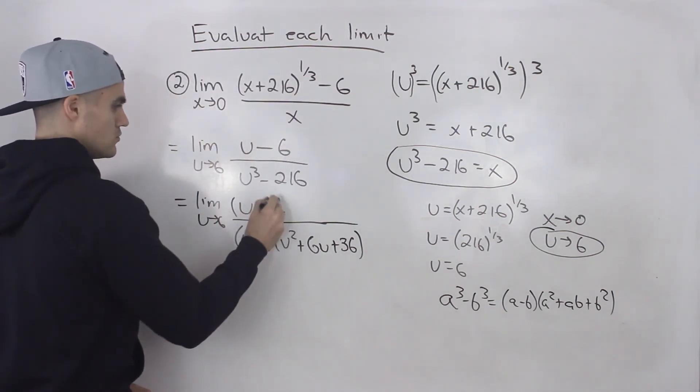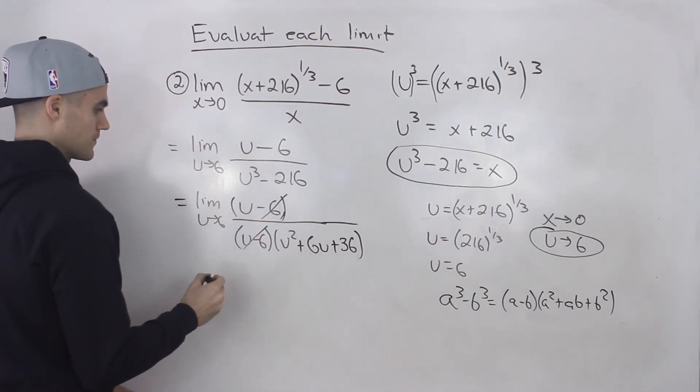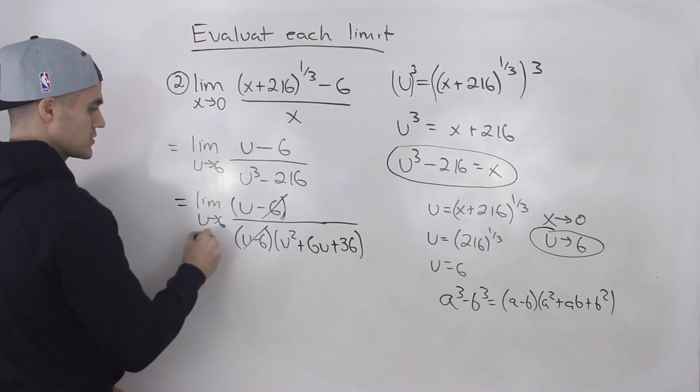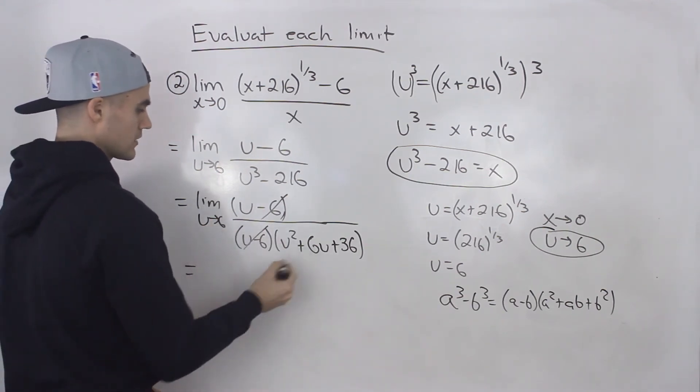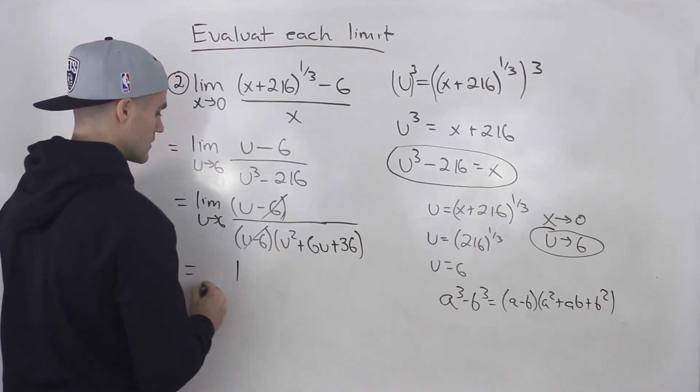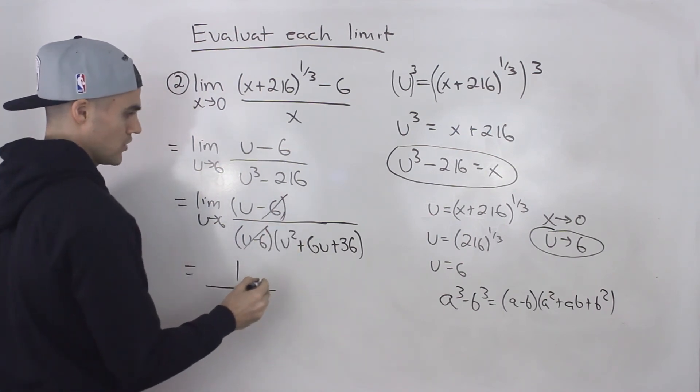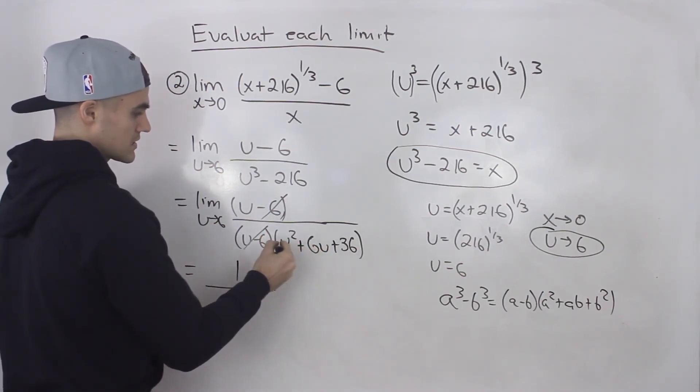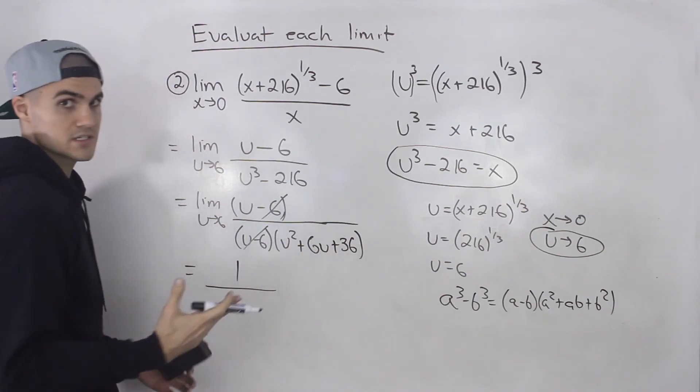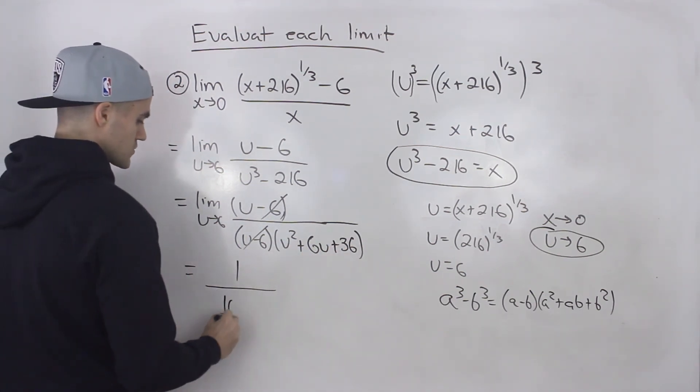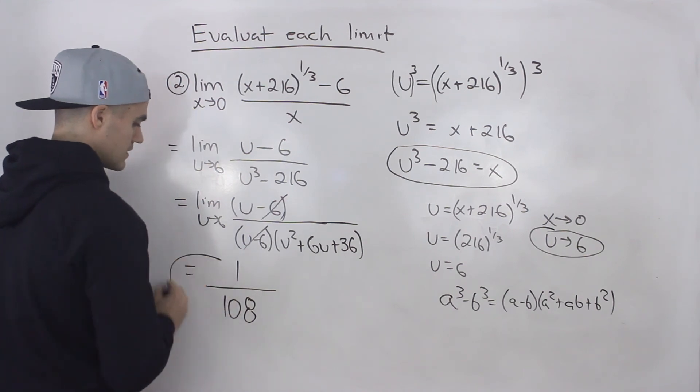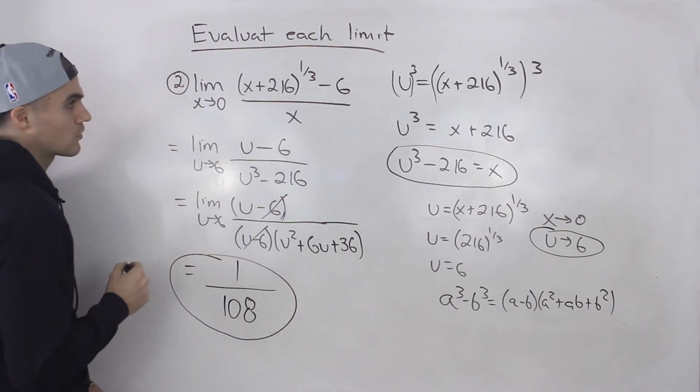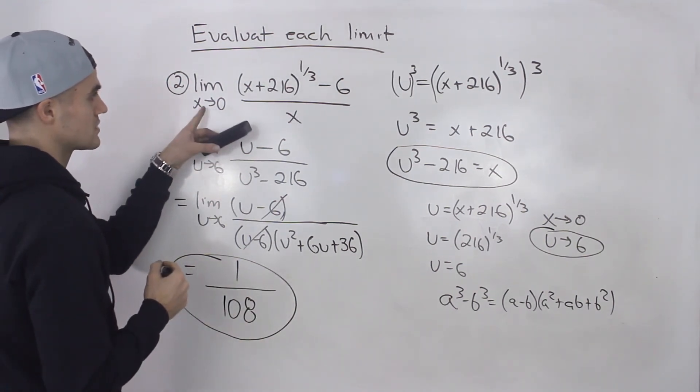And now notice that the u minus sixes cancel out. And now we can make a direct substitution of u equaling six. And when we do that, we'd have one in the numerator, six squared plus six times six plus 36. All of these are 36, so it's like 36 times three, which is just 108. And that is your final answer. One over 108 is the answer to this limit.